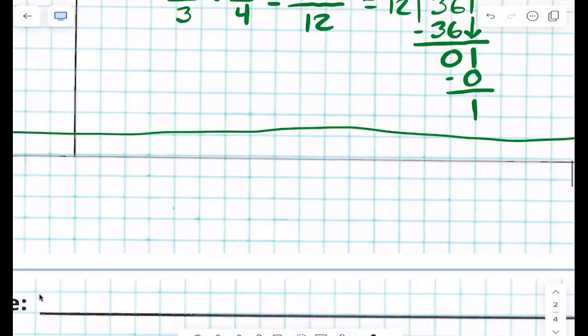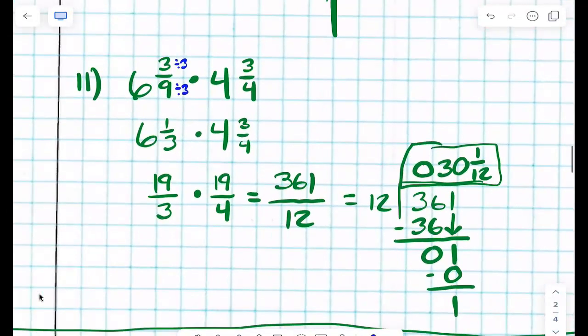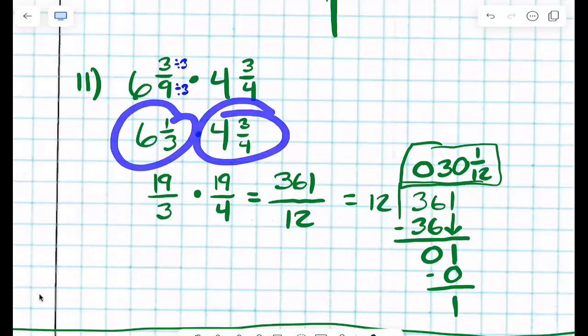How about number 11? Three ninths is reducible, yes? Yes. So now we're dealing with six and one-third, which is a lot easier than six and three ninths, yes? Yes.